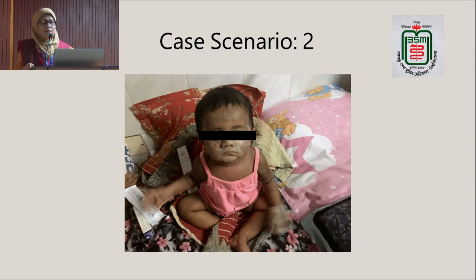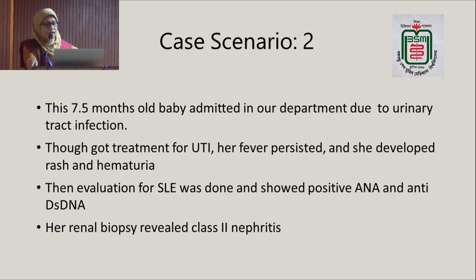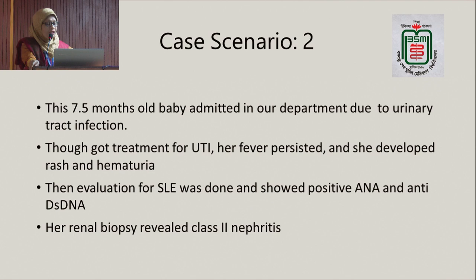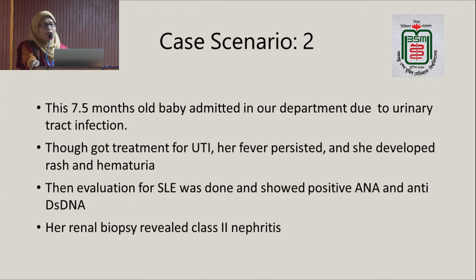Another case is a very little child, only 7 months and 15 days old. She presented to us admitted for UTI. Though she received treatment for UTI, her fever was not remitting, and ultimately during admission she developed rash and hematuria. We did the evaluation for SLE and it showed positive ANA and anti-dsDNA. Her renal biopsy revealed class 2 nephritis. These two are atypical presentations of lupus nephritis — one presented with nephritic syndrome and the other, a very young child, presented like UTI and ultimately developed rash.